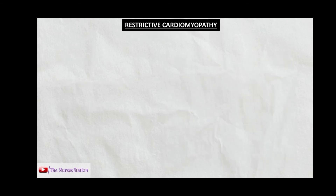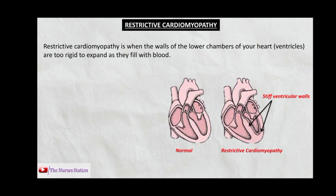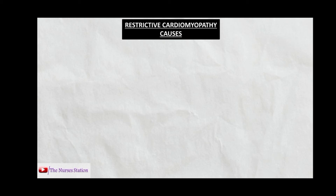The third type is restrictive cardiomyopathy. In restrictive cardiomyopathy, the ventricles are too rigid to expand as they fill with blood, leading to failure to relax properly during diastole. Since the ventricles cannot relax, less blood fills them, decreasing cardiac output — this is termed diastolic heart failure. Causes include: idiopathic (most common), post-radiation fibrosis from radiation therapy for substernal or mediastinal tumors causing myocardial fibrosis.